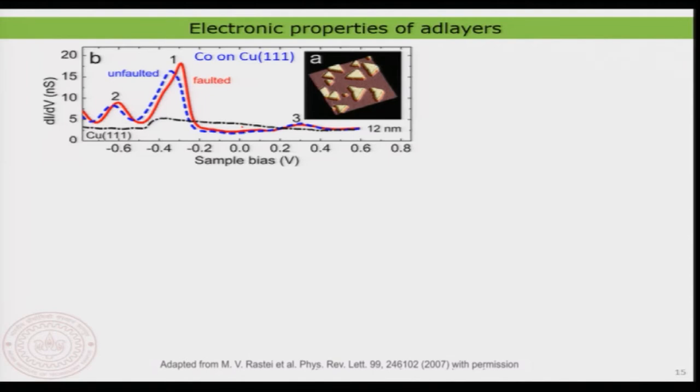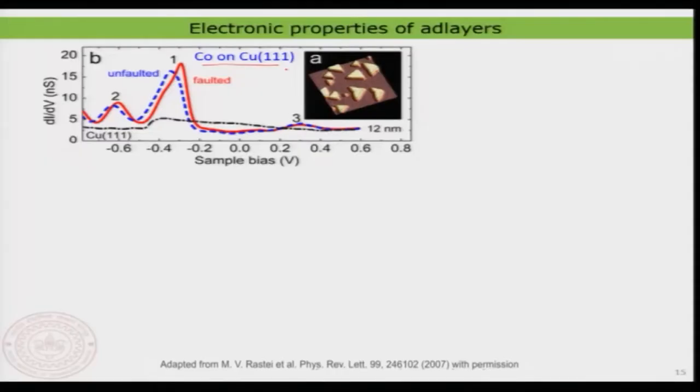Now in this lecture I am going to show a cobalt island, or cobalt adlayer, formed on a copper 111 surface — an example we examined in previous classes in greater detail, including its microscopic structure. The spectrum is recorded in a window of about −0.8 volt to +0.8 volt, a relatively small window, so you can see the spectrum inside.